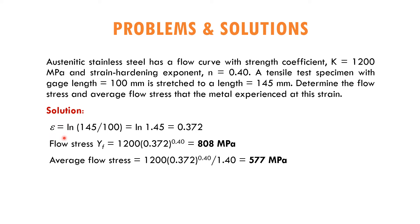Epsilon is calculated using the natural log of the final length over the initial length. The specimen is stretched to 145 mm from 100 mm, so epsilon equals ln(145/100) equals ln(1.45), which gives 0.372. Using this value, we can calculate the flow stress to be 1,082 MPa and the average flow stress equal to 773 MPa.